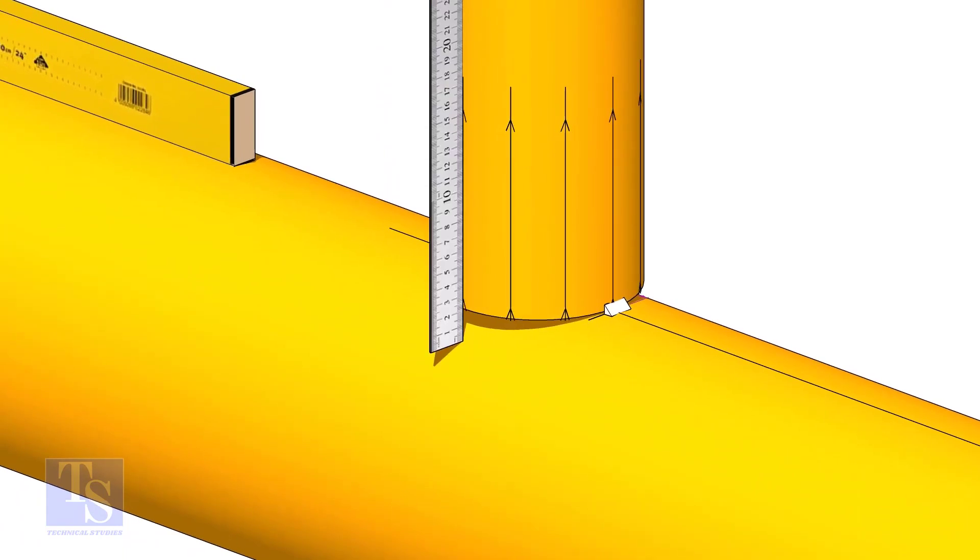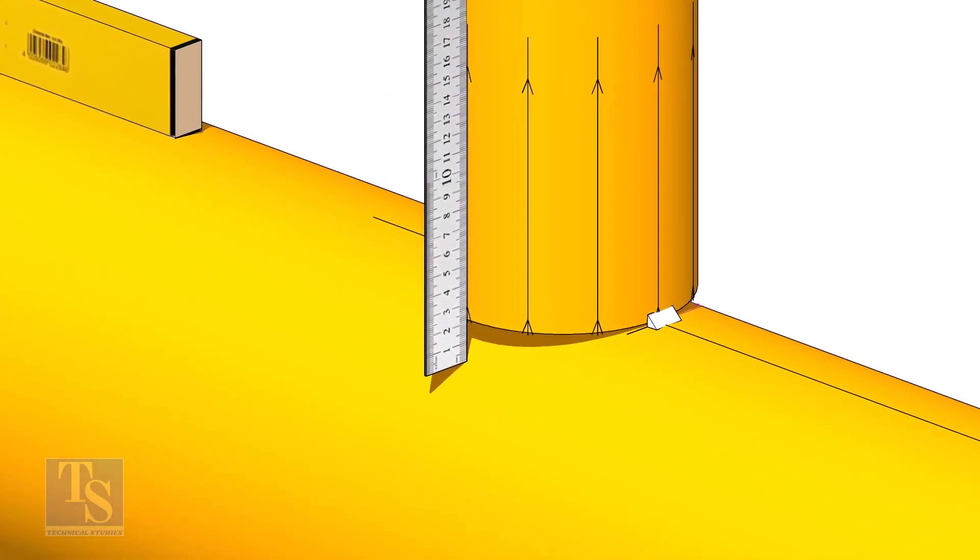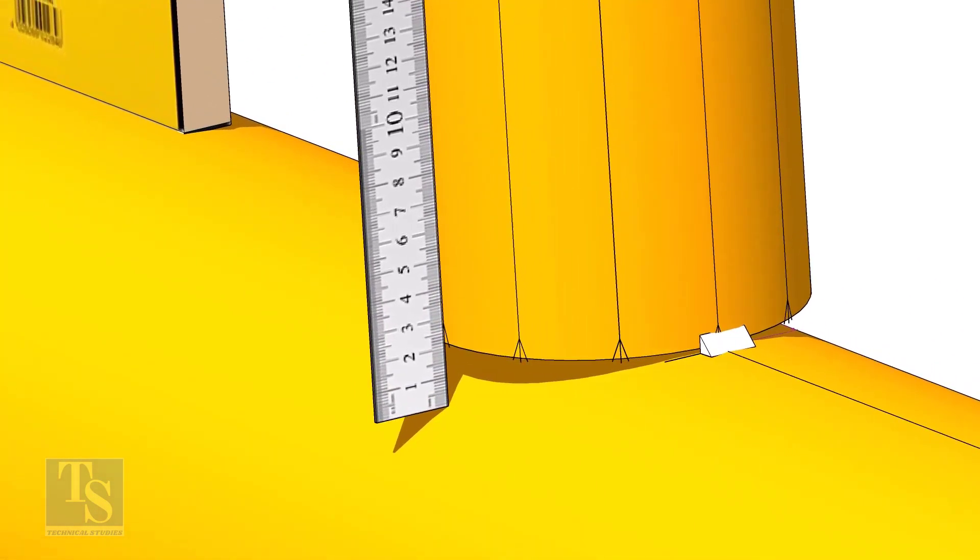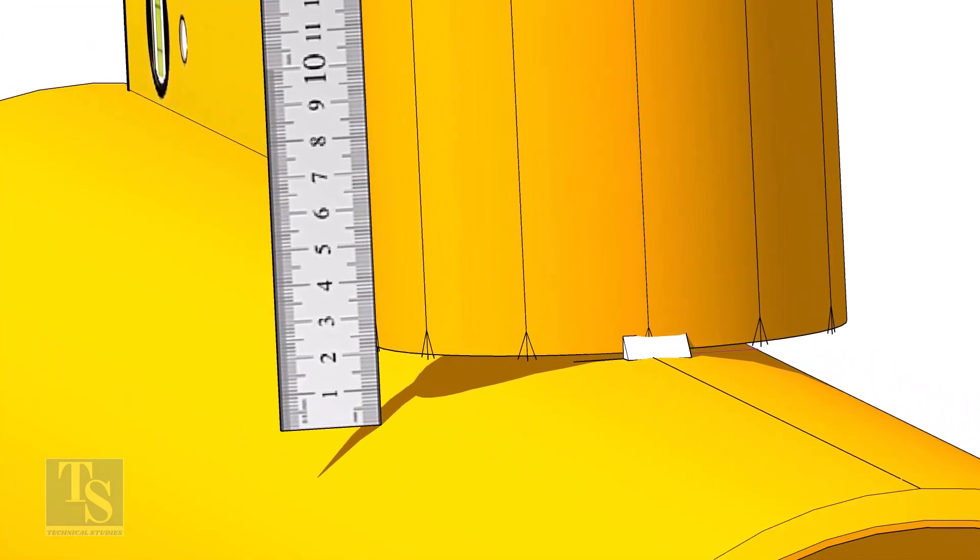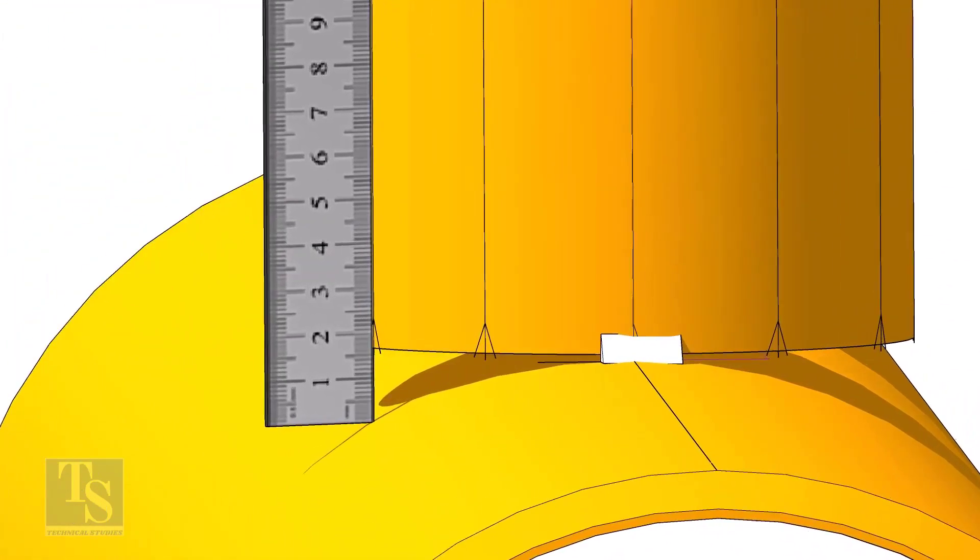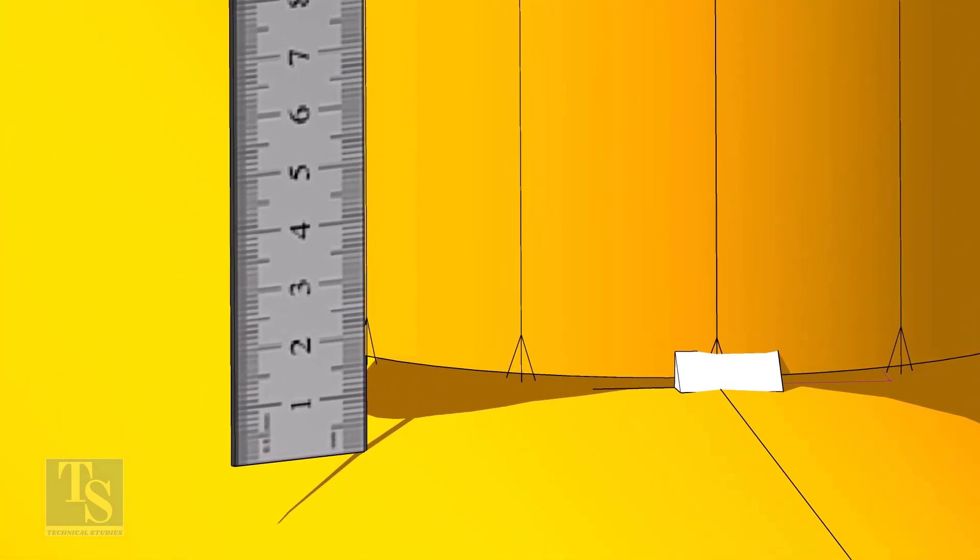Check the gap between the header and the branch as shown. When you measure, make sure the scale is vertical and is on the line on the branch pipe. Move the scale to the next vertical marking on the branch. Mark the distance on the branch from the header. In this case, it is 22 millimeters.